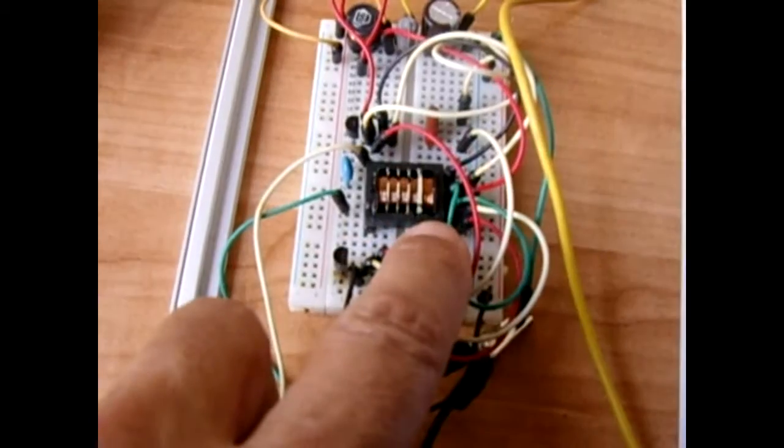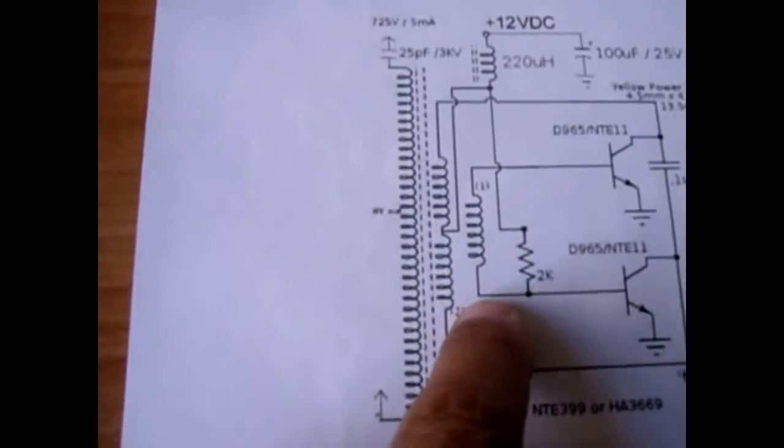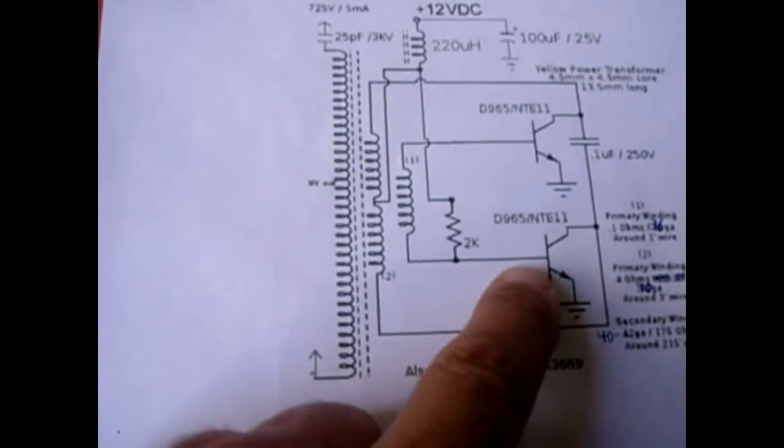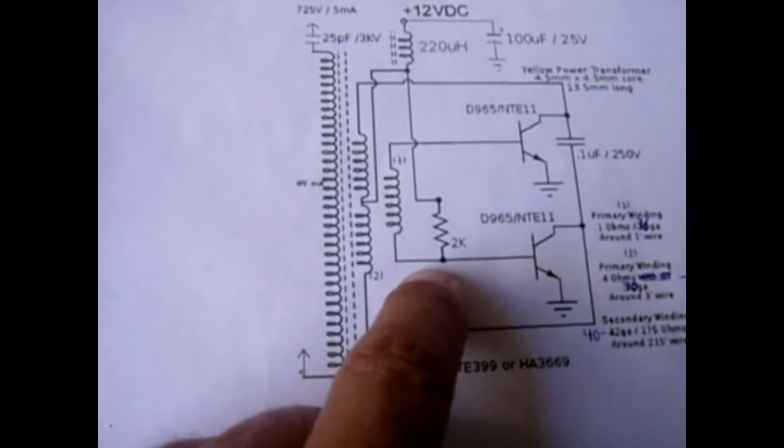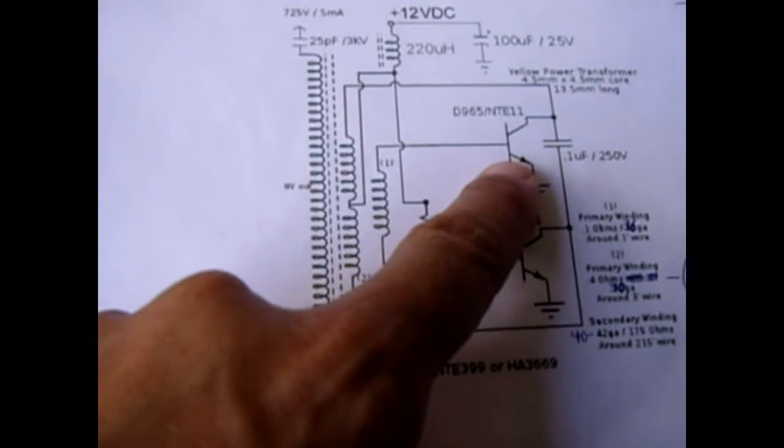So once you've made this coil and you have one end going to the base of this transistor and tying into the 2k, the other end will go into this base of this transistor.